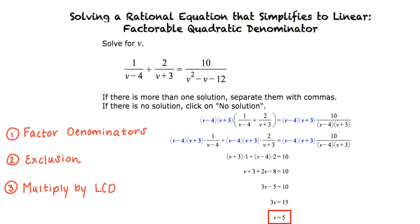Since this number is different than those which we already determined must be excluded from our answer, 4 and negative 3, we know that our final answer is v equals 5.